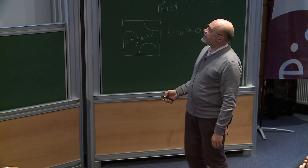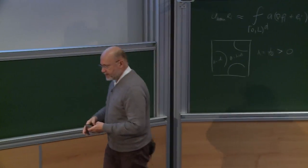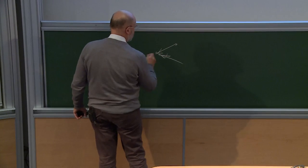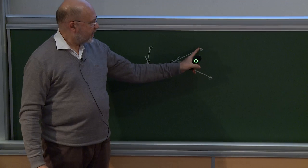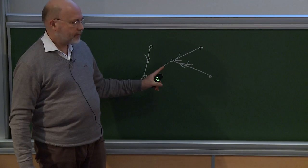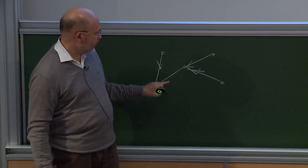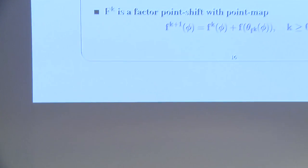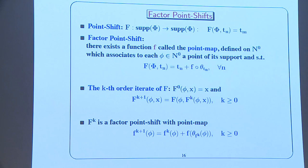One more thing: iterated images of f. The point process f^{(1)} of phi is the set of points having at least one preimage; f^{(k)} is the set of points with at least k preimages. This is a stationary, theta_t-compatible point process and will be used in what follows.